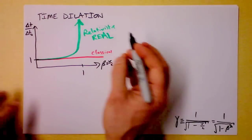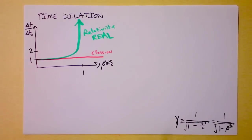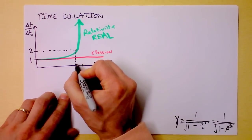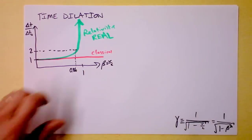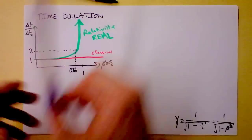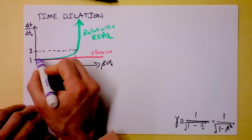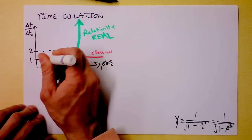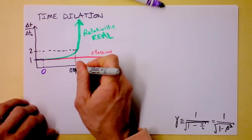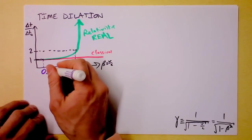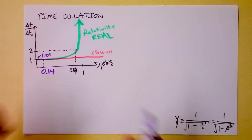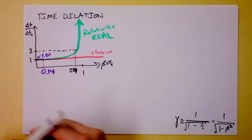We can mark some interesting points on the time dilation graph. I always think it's interesting to find when time doubles. With a dotted line, time doubles at about 87% the speed of light. We can also find where time goes up by just 1% — I'll mark that in purple. That turns out to happen at about 14% the speed of light, where time dilation reaches about 1.01. That's where I'd say the onset of relativistic effects begins.